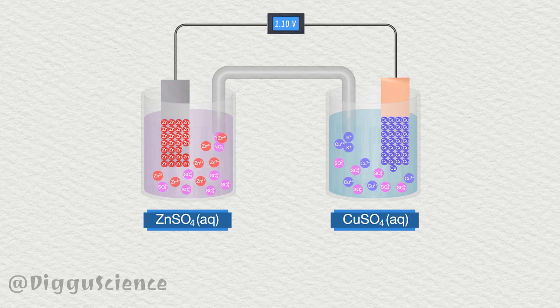Therefore, two nitrate ions enter the zinc sulfate solution to neutralize the Zn2+ charge. Likewise, two potassium ions enter the copper sulfate solution to replace the charge of the copper ions that have become copper atoms.